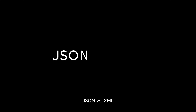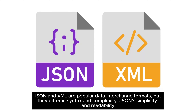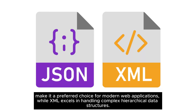JSON vs. XML. JSON and XML are popular data interchange formats, but they differ in syntax and complexity. JSON's simplicity and readability make it a preferred choice for modern web applications, while XML excels in handling complex hierarchical data structures.